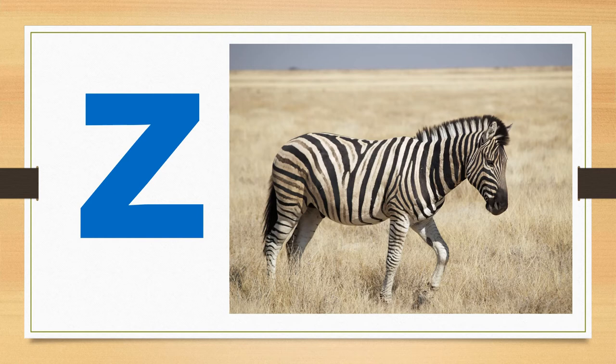The word zebra starts with the sound Z. Z. Zebra. Z. Say it with me. Z. Zebra.